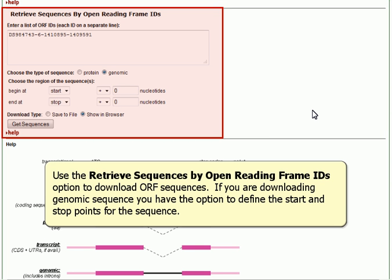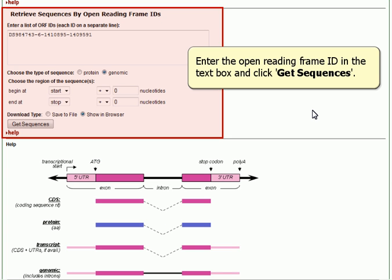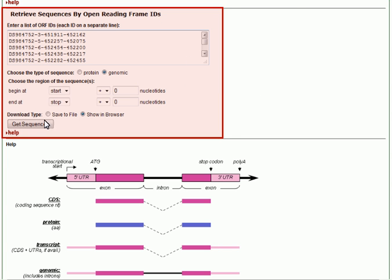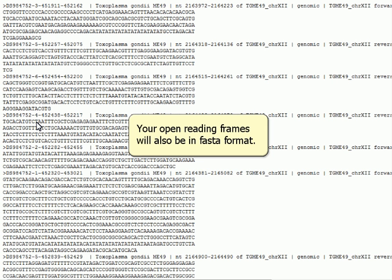Use the Retrieve Sequences by Open Reading Frame ID option to download ORF sequences. If you are downloading Genomic Sequence, you have the option to define the start and stop points of your sequence. Enter the Open Reading Frame ID in the text box and click Get Sequences. Your Open Reading Frames will also be in FASTA format.